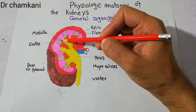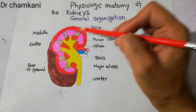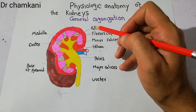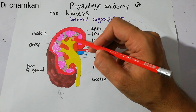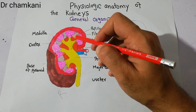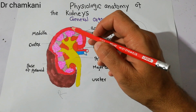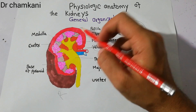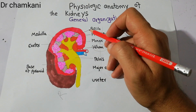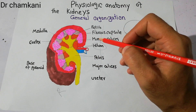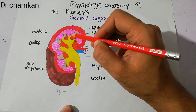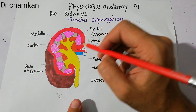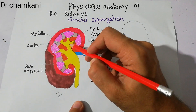The tip of the pyramids is basically the papilla. These papilla empty the urine — urine is formed in individual nephrons, which unite together to form the papilla at the tip of the pyramid. The papilla empties into the minor calyces, and these minor calyces basically empty into the major calyces.